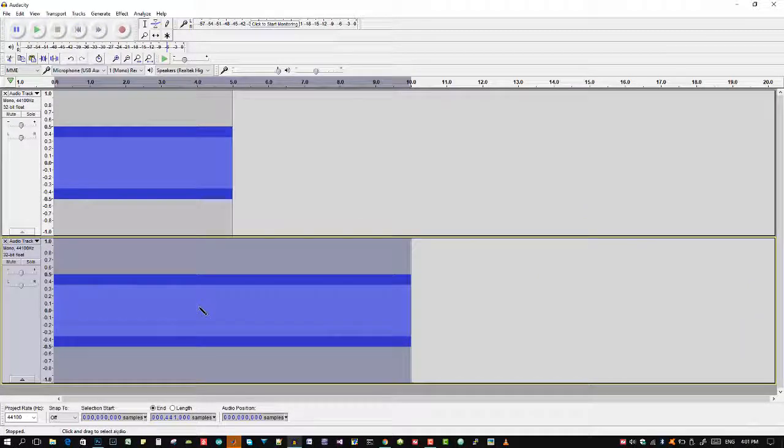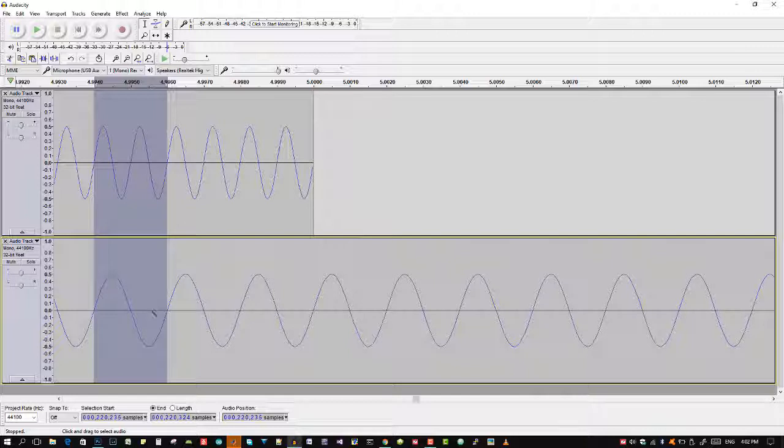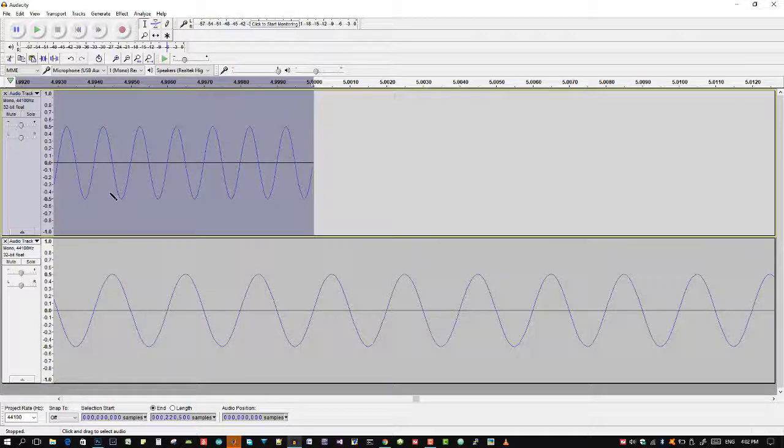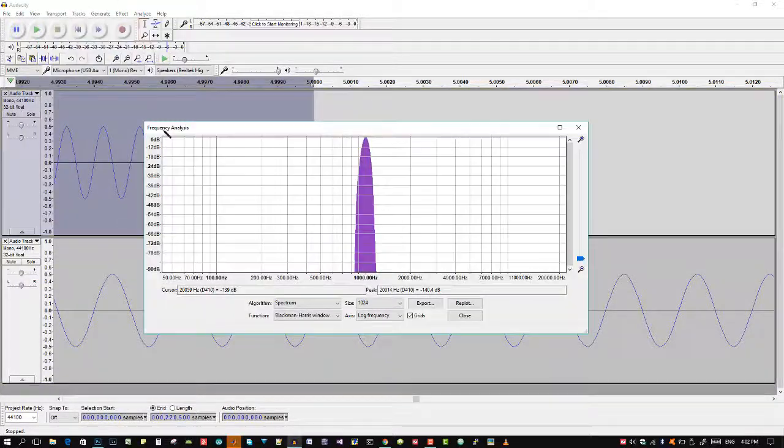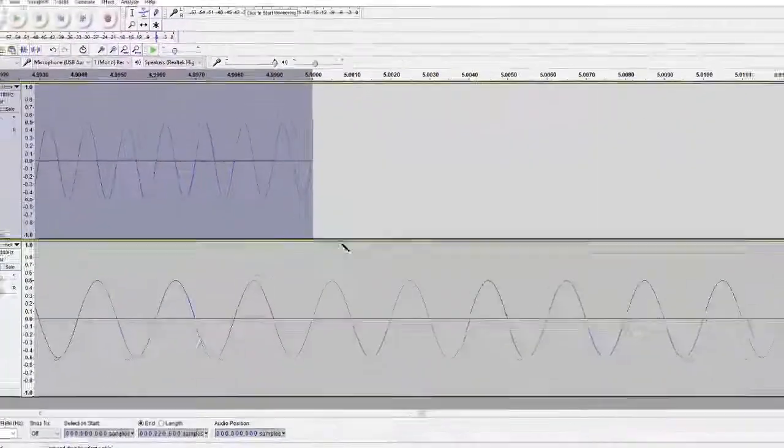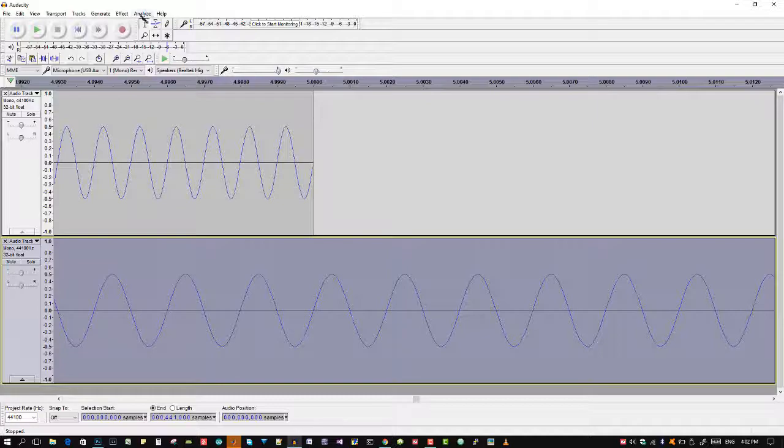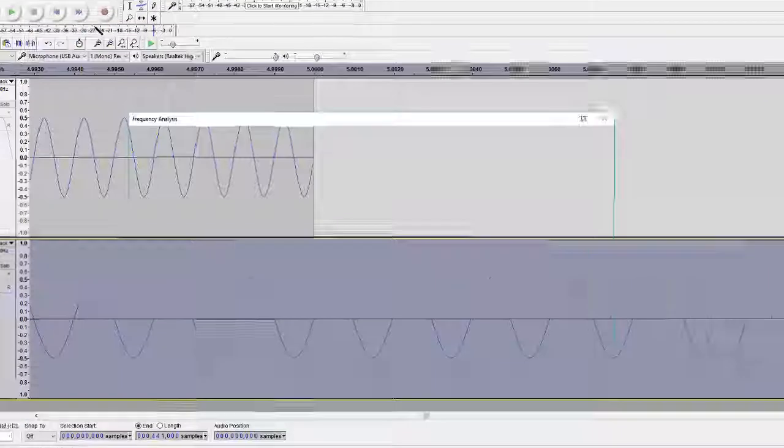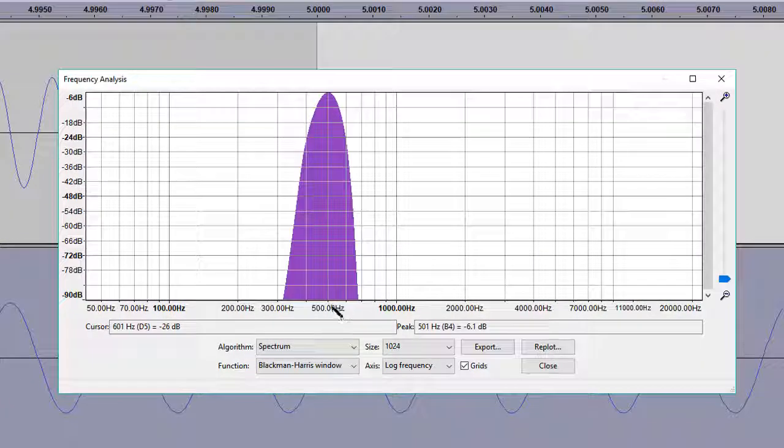You can see we have this waveform here. If we zoom in, we can observe that there should be some reduction of frequency in our newly created signal. Let's select our original signal. We have already seen its frequency is 1000 Hz. Let's close this. Select the second track. Let's go to plot spectrum. You can see its frequency has changed to 500 Hz.